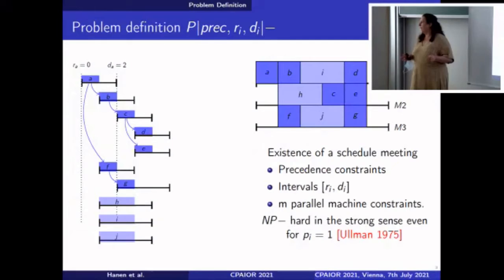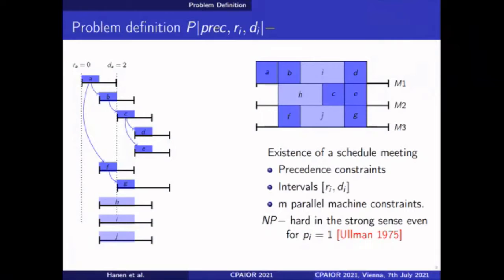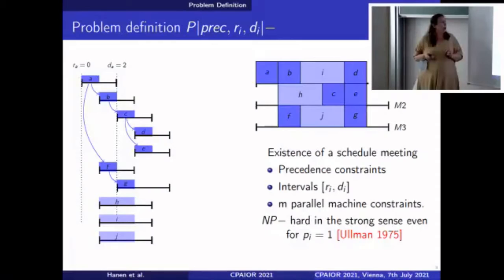So what is our problem? It's a very old and simple setting. We are given a set of tasks linked by precedence relations, and each task has a time window, a release time and a deadline. There are N parallel processors. In this example, N equals three, and we are interested in the decision problem: whether there exists a feasible schedule that respects both precedence constraints and time windows. This problem is usually used to solve optimization problems like minimizing lateness or many other criteria. It's a basic tool.